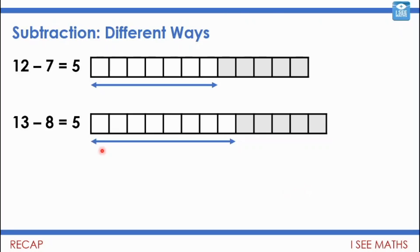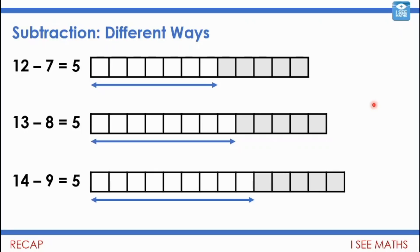Have a look at the picture — what's the same and what's different? Can you see the amount we're taking away is one more, and the total quantity is one more as well, so the difference stays the same. 13 subtract 8 equals 5, and so does 14 subtract 9. The answers are all the same — 2 more added to both numbers keeps the same answer.